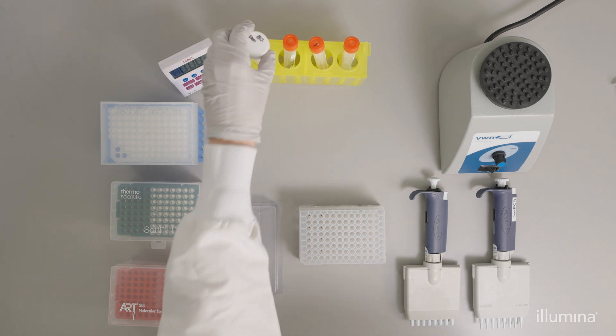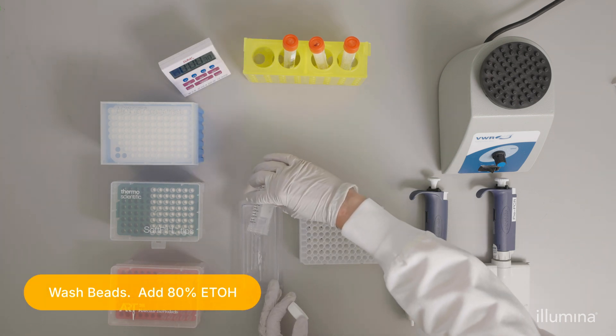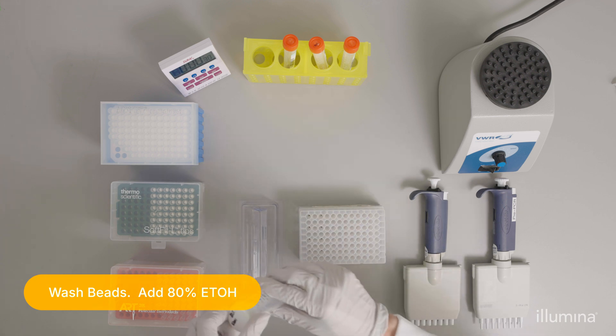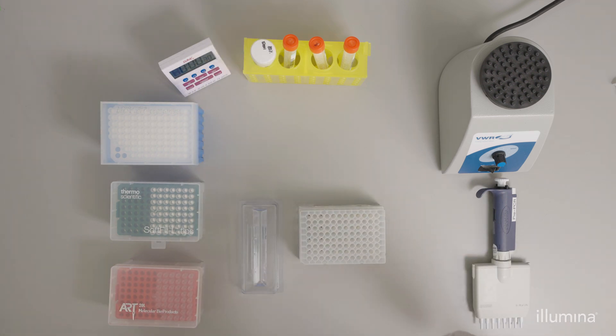To wash beads, keep the MIDI plate on the magnetic stand. Add freshly made 80% ethanol to a new trough and add appropriate volume to each sample well of the MIDI plate using a 200 microliter multi-channel pipette.